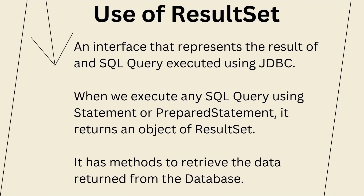Next: what is the use of ResultSet? Whenever we execute an SQL query to fetch data from a table or view, the data received will be of type ResultSet. This is a special interface representing the result of an SQL SELECT query. It has methods to retrieve the returned data — for example, the hasNext() method tells whether more rows are available, and we can get data based on column name or index.